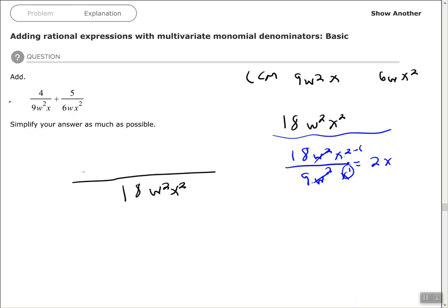So that tells me I multiply by 2x. My second denominator: let's do it again. 18w²x² divided by 6wx². 18 divided by 6 is 3. w² divided by w to the first is w to the first. And the x squares cancel out.